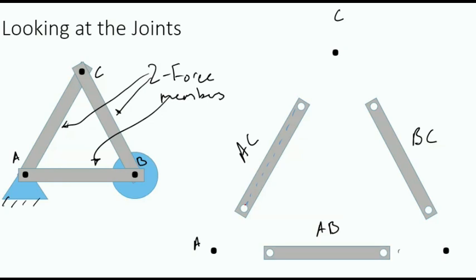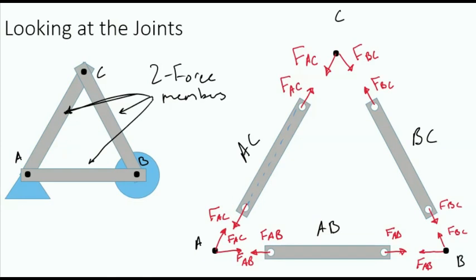Focusing on the member, if we assume the members are in tension, that means there must be outward forces along the line of action of the member, pulling the member apart. As a convention for two-force members, we will call this F_AC, since it is the internal force on member AC. In order to be consistent, there must be an equal and opposite force in pin C, and an equal and opposite force on pin A. Following a similar process for member AC, we can represent the forces on pins B and C from members AB and BC in a similar manner.